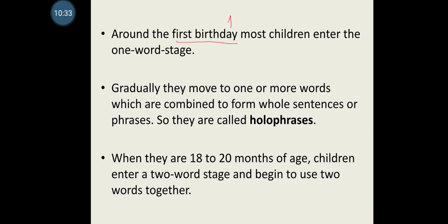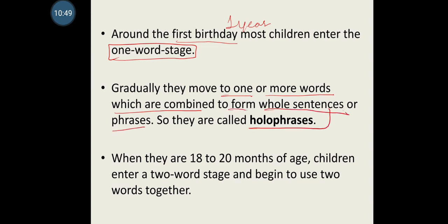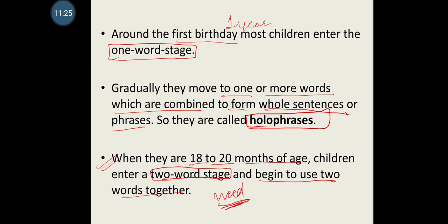By about 1 year of age, most children enter the one-word stage. Gradually they move on to combining one or more words to form whole sentences or phrases, also called holophrase. When they are 18–20 months of age, children enter the two-word stage and begin to use two words together — like 'give water' or 'give food.' Both the one-word and two-word stages are need-based.